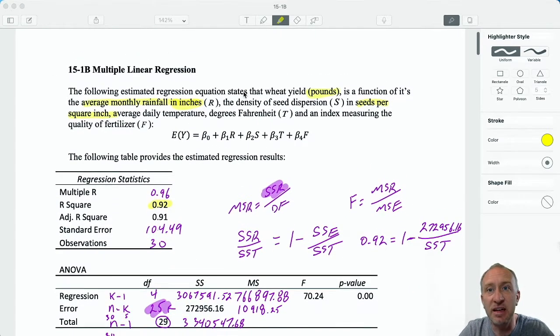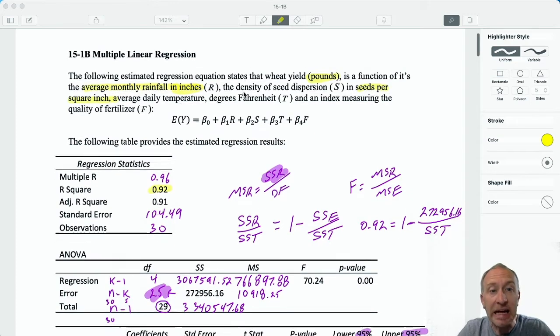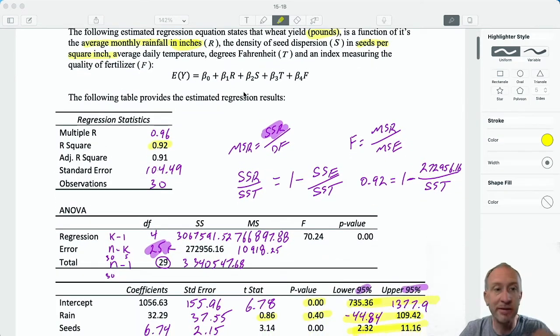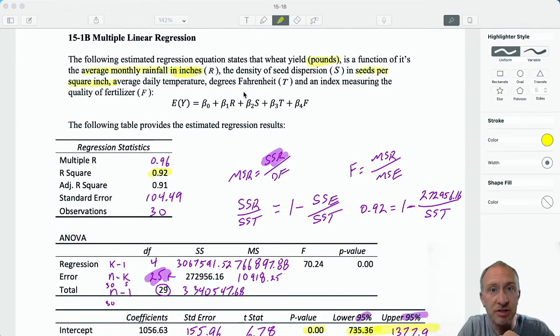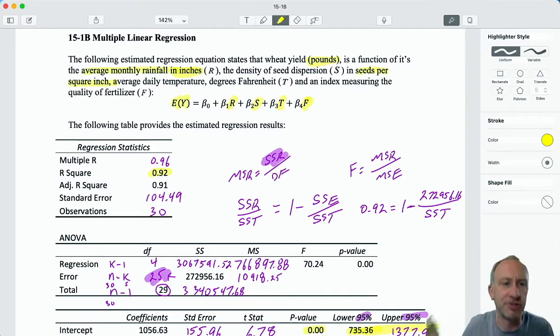We're in problem 15.1b. In the first video, we spent probably a good half an hour or so filling out this partial Excel output for this multiple regression model that relates a few variables here. We have rainfall, we have density of seed dispersion, temperature and an index measuring the quality of fertilizer being used to predict wheat yield. So an agricultural model.